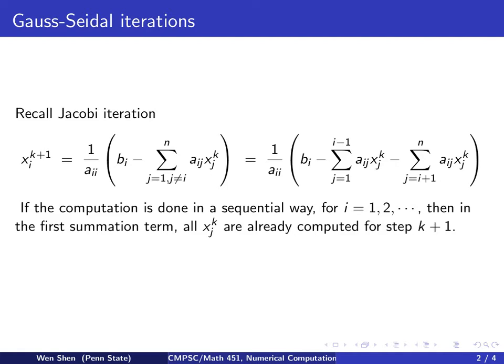And now, assuming that it converges, or we hope for convergence, then the value at step k plus 1 shall be a better one than the value at step k.